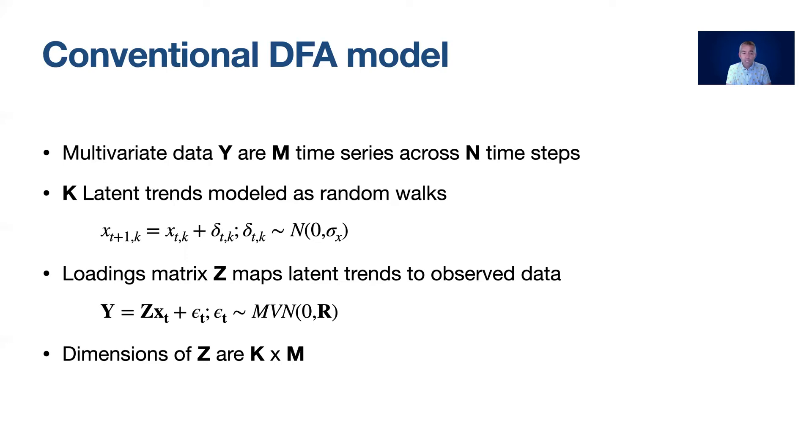That multiplication of Z and X is further corrupted by observation errors which are multivariate normal with some covariance matrix R. R may be a diagonal matrix in which case each of those observed time series have a unique observation process or that R may be structured some way so that they're correlated.